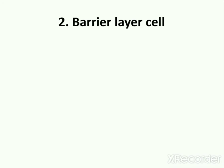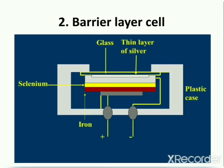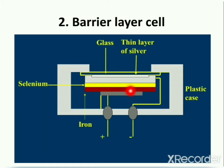The next main detector used in ultraviolet visible spectrophotometers is the barrier layer cell, also known as the photovoltaic cell. In its construction, it consists of a semiconductor selenium — the yellow portion denotes the selenium semiconductor. Selenium is deposited on a strong metal base such as iron — the red portion denotes the iron metal base. A very thin layer of silver or gold is deposited over the surface of the semiconductor, and this thin layer acts as a second collector electrode.